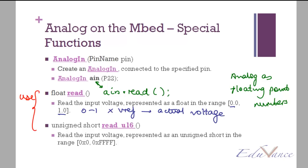Most frequently you will be using the float read function because you typically read analog values. You can use this as ain, that is your variable name, dot read. So this gives you a floating point number in the range of 0 to 1.